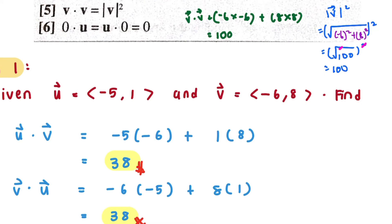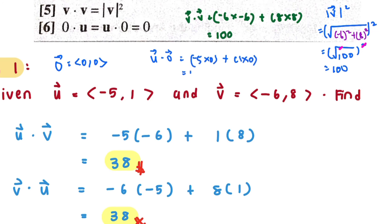Now let's see property number six: the zero vector dot u equals u dot the zero vector, which equals 0. Using vector u which is negative 5, 1, and the zero vector 0, 0: u dot zero vector is negative 5 times 0 plus 1 times 0, which equals 0. This proves property six: u dot 0 or 0 dot u equals 0.